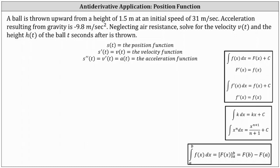A ball is thrown upward with a height of 1.5 meters at an initial speed of 31 meters per second. Acceleration resulting from gravity is negative 9.8 meters per second squared. Neglecting air resistance, solve for the velocity v of t and the height h of t of the ball t seconds after it is thrown.